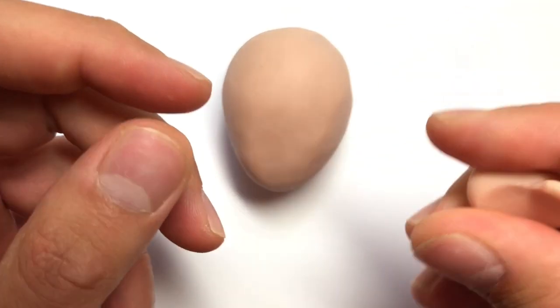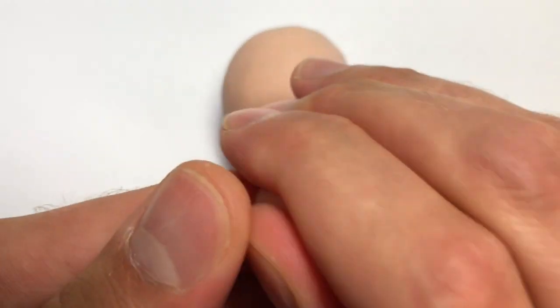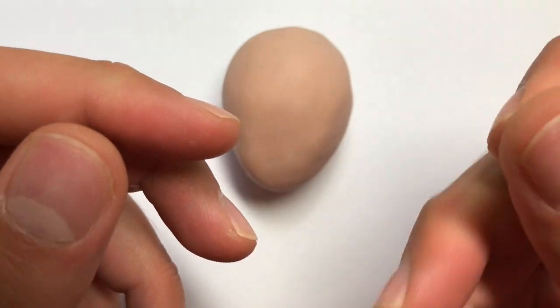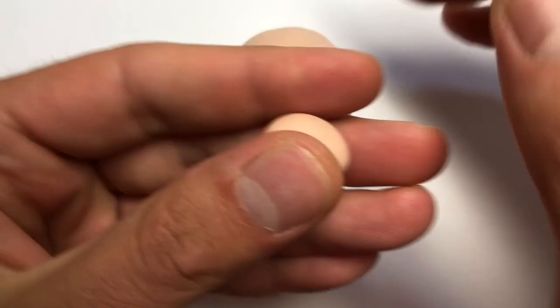The first thing I'm going to do is sculpt the chin and the bottom lip, like I said, as one piece. I'm going to do this by taking some of my clay, balling it up.